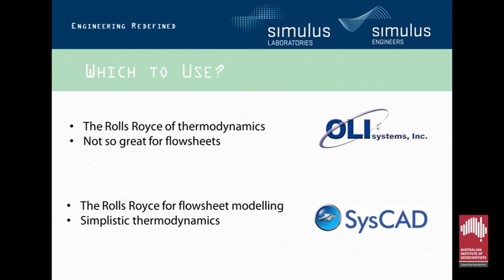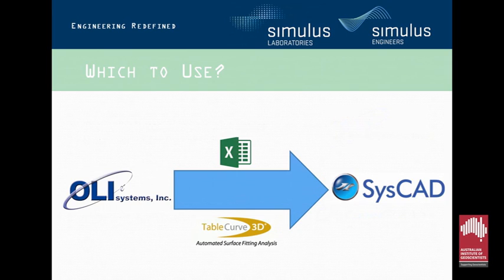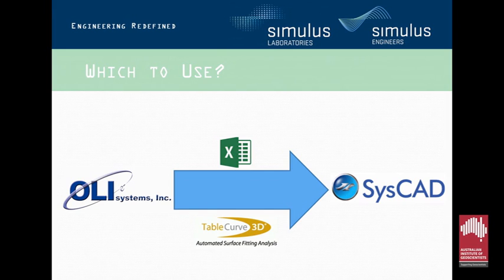What do we do when we want to put extremely complex chemistry into a flow sheeting package that doesn't have the thermodynamic sophistication of OLI but has the overall flow sheet simulation? We can use both. There are ways to take complex data from OLI, find the most important correlations, and convert them into simple 2D or 3D multi-dimensional correlations using standard tools. Excel is the go-to, and there are other fairly cheap tools like TableCurve 3D/2D — a few hundred dollars — that can curve-fit to extremely high R-squareds from hundreds of equations. You then use these equations in SysCAD, giving you the power of OLI's thermodynamic modelling within the SysCAD flow sheet.